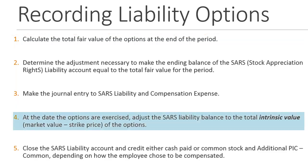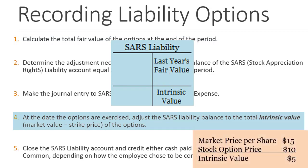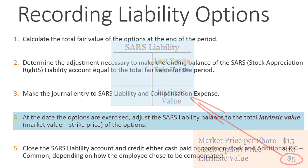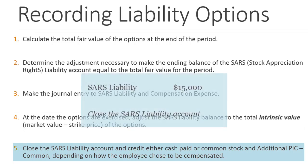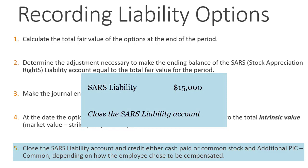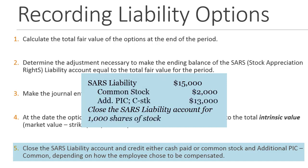When the employee exercises the option, I first change the SARs liability balance from fair value to intrinsic value — market value minus strike price. In our example, $15 market minus $10 strike equals $5 intrinsic value, so I get the SARs liability to that $5 per share amount. Then I close the SARs liability: debit the liability, and credit whatever I'm giving them. Typically they want cash, so I debit SARs liability and credit cash.